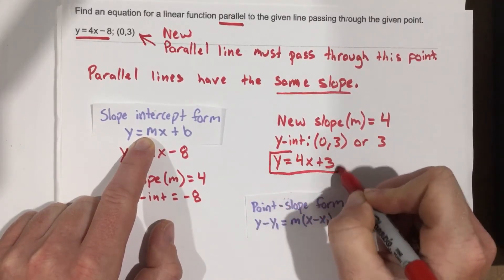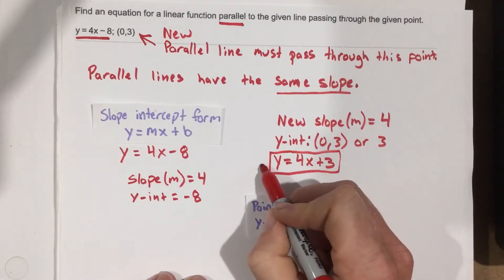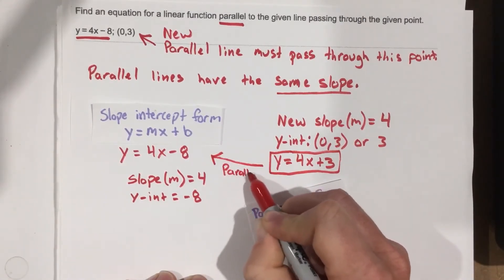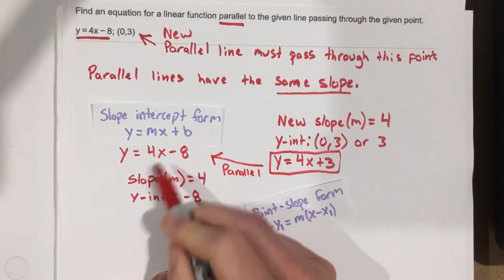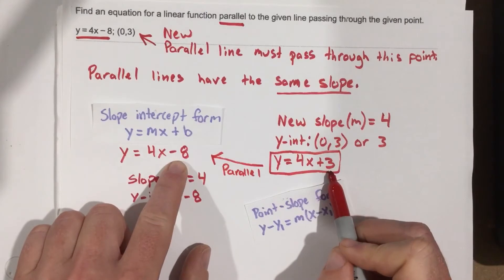This is the answer, and it's parallel to the original equation they gave us, because they have the same slope, different y-intercepts.